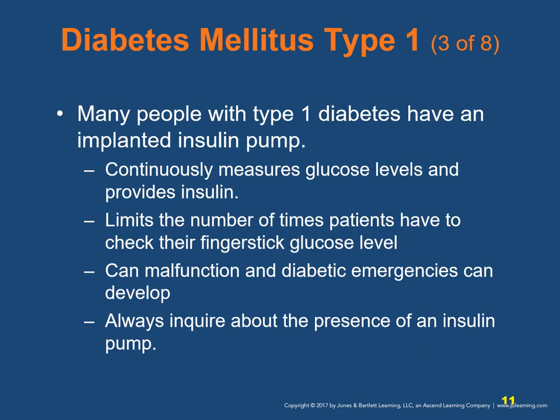Patients who inject insulin often need to check blood glucose levels up to six times or more a day. Many people with type 1 diabetes have an implanted insulin pump that continuously measures glucose levels and provides insulin and correction doses based on carbohydrate intake at mealtimes, limiting the frequency of finger-stick checks. However, the pump can malfunction and diabetes emergencies can develop. Always inquire about the presence of an insulin pump and ask if it is working properly.